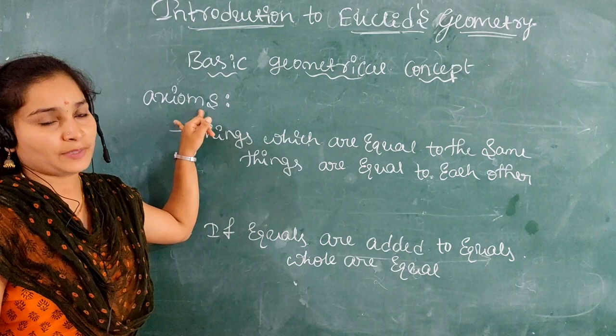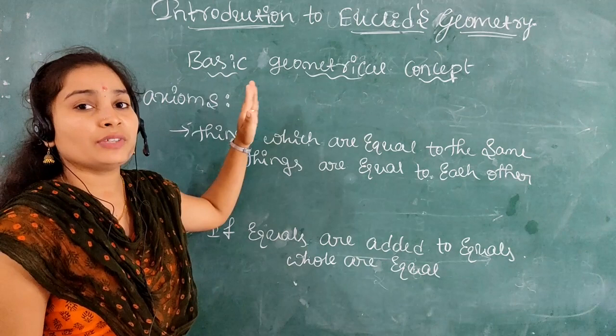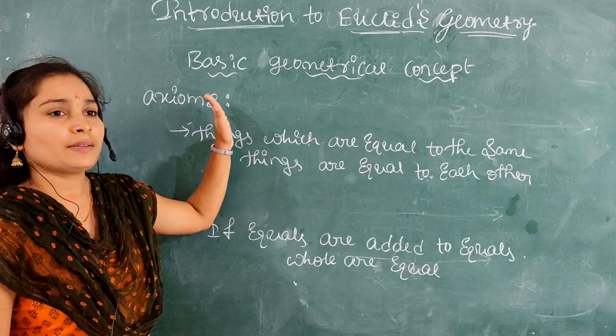Now we move on to the next topic: Axioms. Axioms are basic facts which are taken for granted without proof. You can take any statement as an axiom without needing proof. Let us discuss the Euclid axioms one by one.